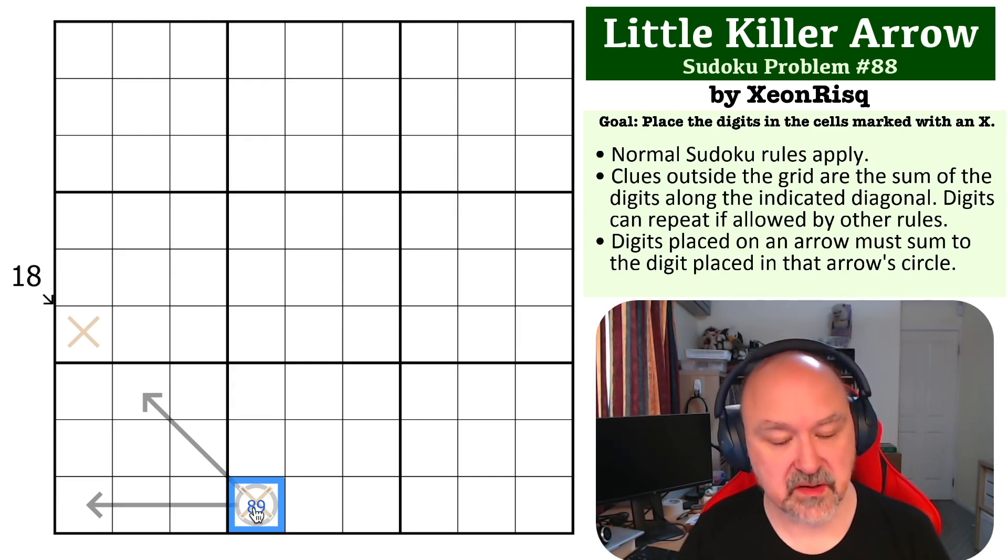And now we want to look at the little killer in combination with this little diagonal arrow. Because if this is an 8, then these will sum to 8 plus 8, these will sum to 16, and this would be a 2. If this sums to 9, however, this will sum to 9 plus 9, this would be 18, and that would have to be a 0, which doesn't work. So this is a 2, and this has to be the 8, and that's the solution to the problem.